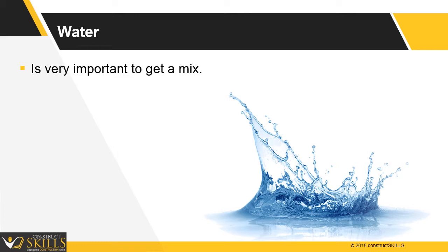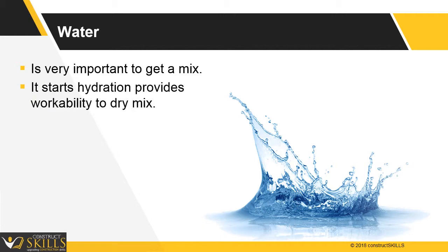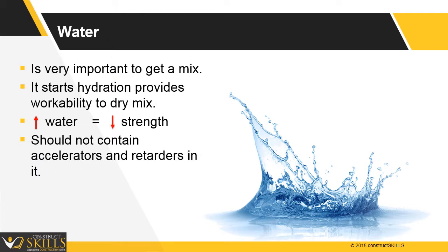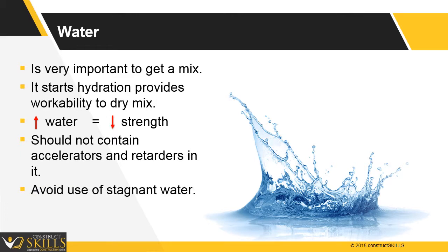Water is an important ingredient to get a mix. Two main functions are there of water: it starts the process of hydration, and it provides workability to the dry mix. But if the quantity increases, it will affect the strength of plastering. Water should not contain any accelerating or retarding chemicals. Avoid the use of stagnant water. For more detail, refer to 3.04 for water.